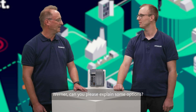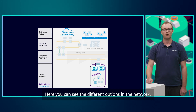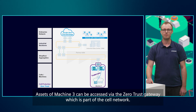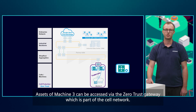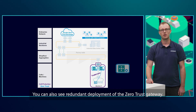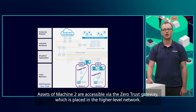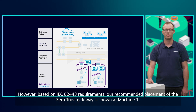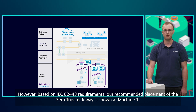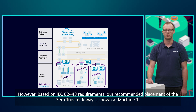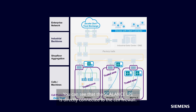Werner, can you please explain some options? Sure. Here you can see the different options in the network. Assets of Machine 3 can be accessed via the Zero Trust Gateway, which is part of the cell network. You can also see redundant deployment of the Zero Trust Gateway. Assets of Machine 2 are accessible via the Zero Trust Gateway, which is placed in the higher-level network. However, based on IEC 62443 requirements, our recommended placement of the Zero Trust Gateway is shown at Machine 1. You can see that the Scalens LPE is directly connected to the cell firewall. This allows the creation of a separate subnet, which acts as a cell DMZ.